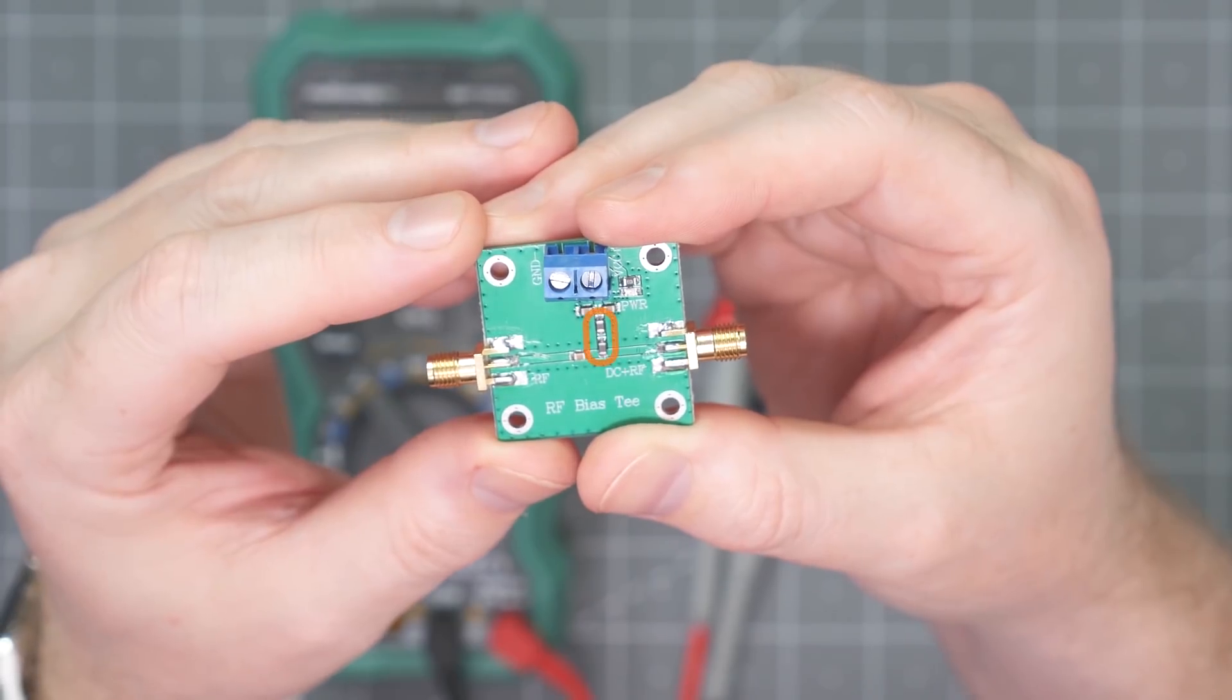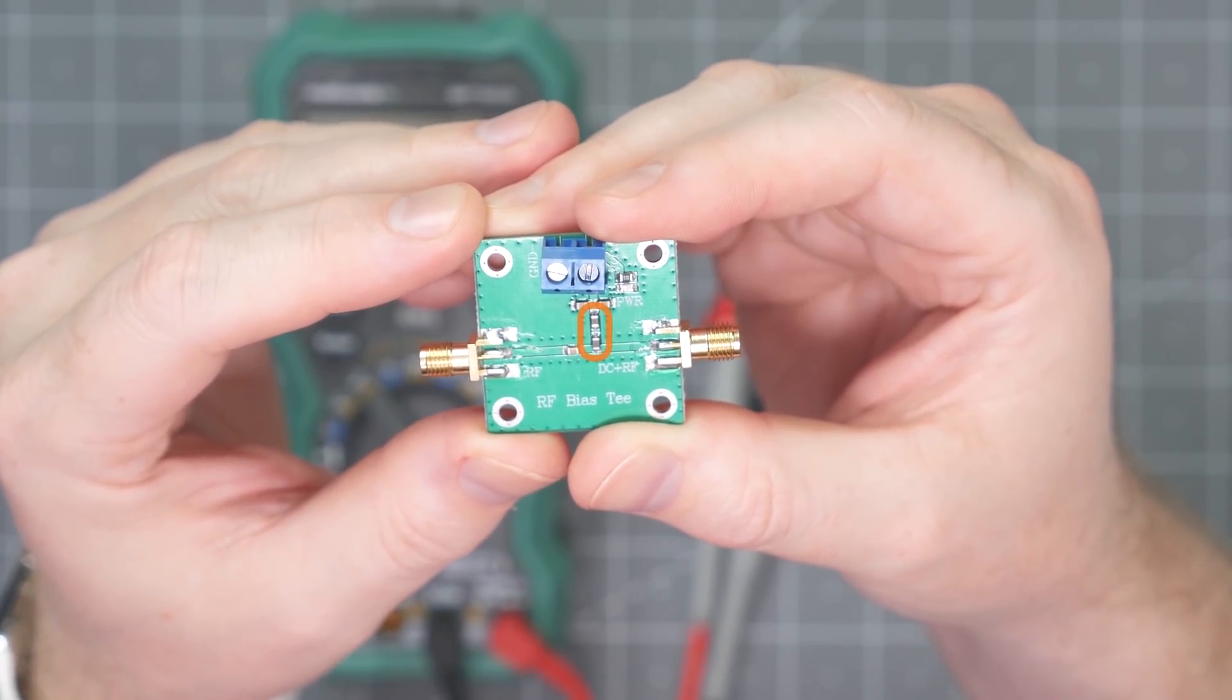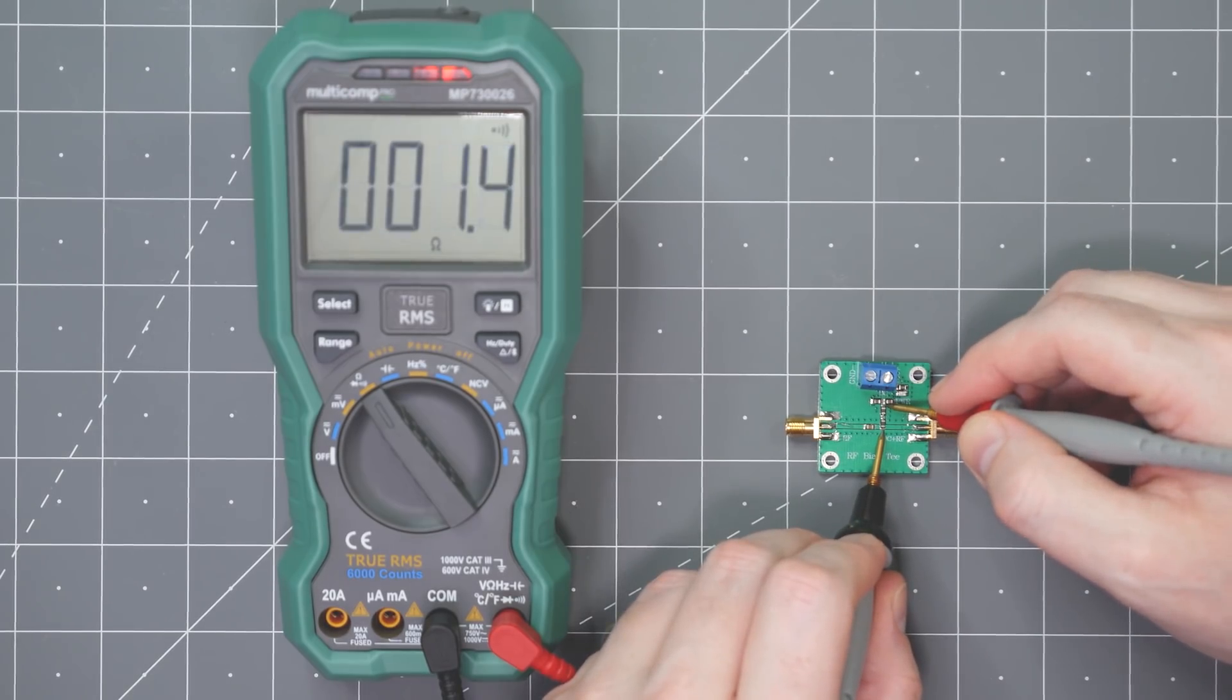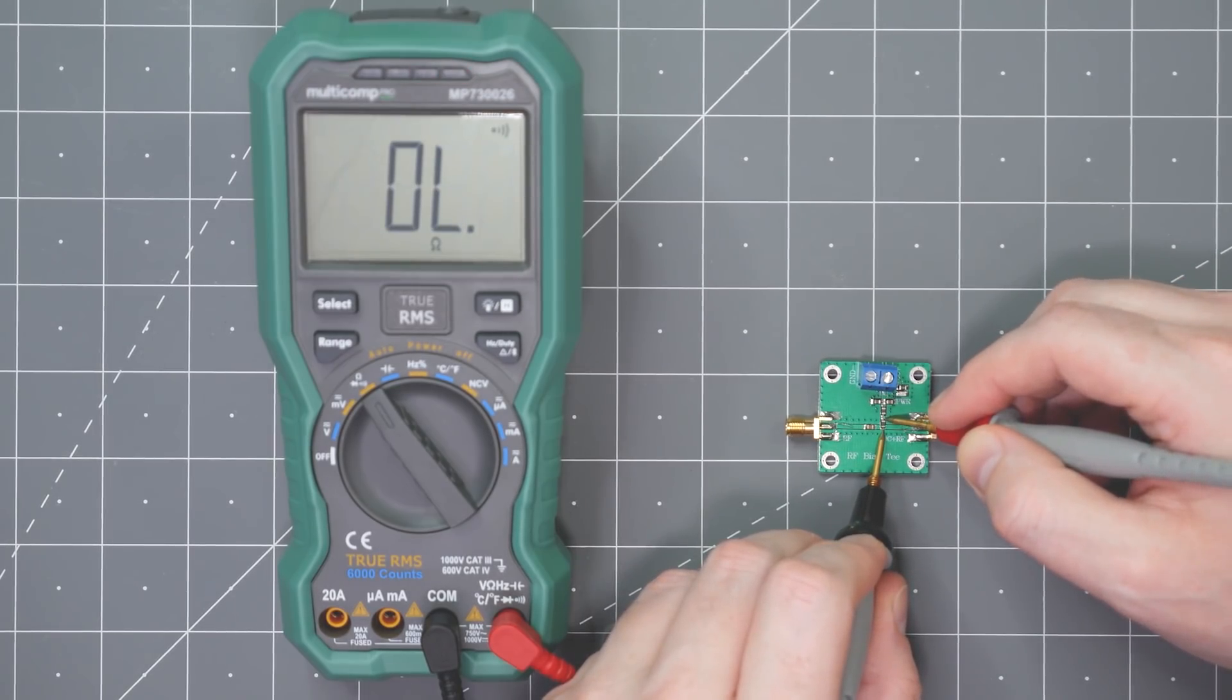So, if capacitors block the DMM's DC measurement, what happens with inductors? It just so happens that these two gray components are surface mount inductors. And, as you can see, the meter measures them as short. Caps and inductors really are polar opposites.